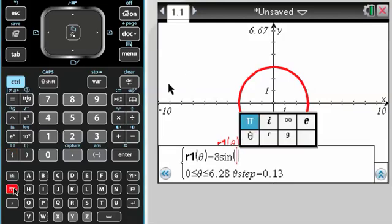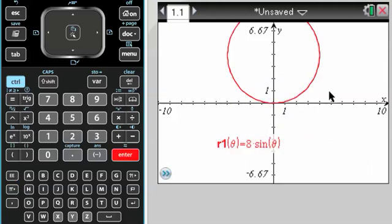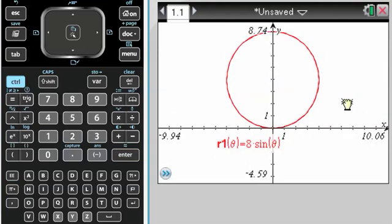Theta's in a weird place. It's actually by the pi key. You can just keep tapping the pi key until you get to theta. 8 sine of theta gives me the graph I'm expecting.